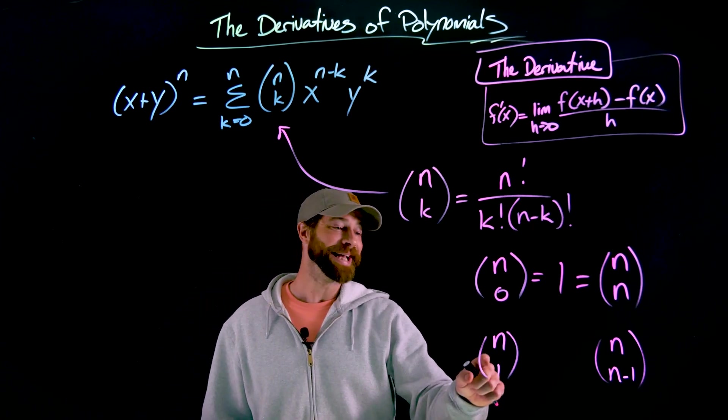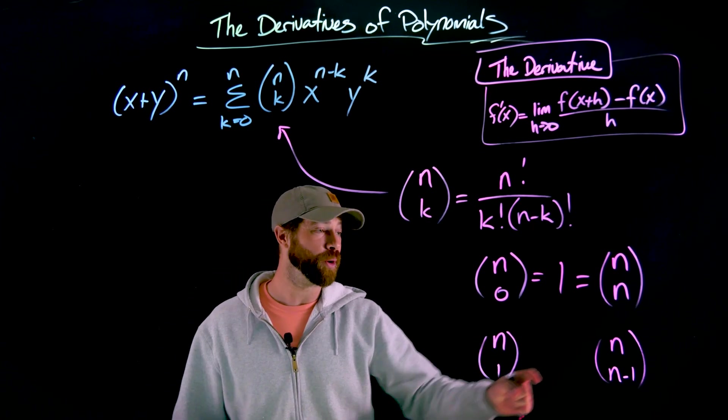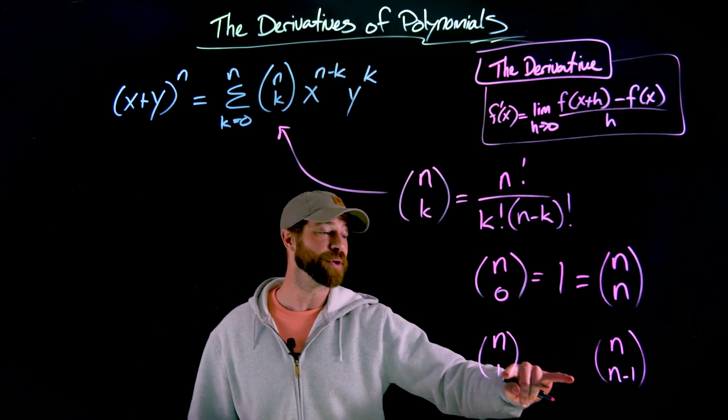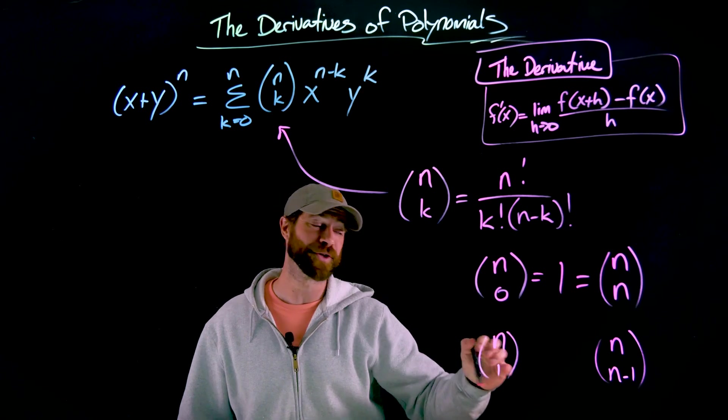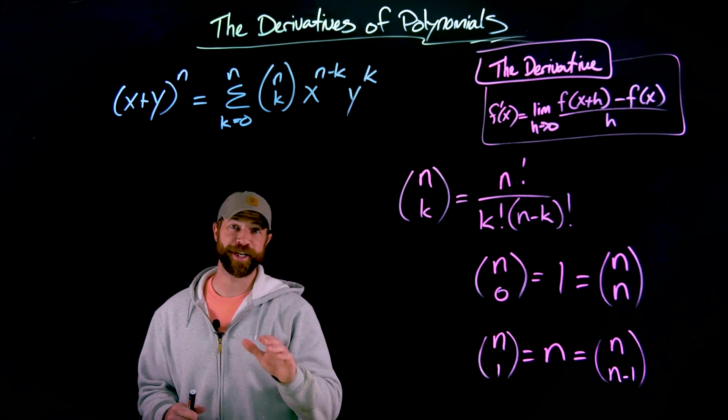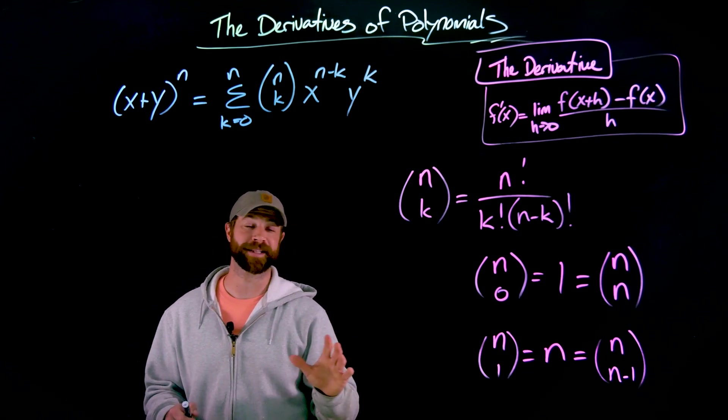Second thing to say is that if you have n choose 1 or n choose n minus 1, so this is 1 less than this right here, you plug either of those statements into the original problem. You'll always output the value n. There's a chance this is feeling all really abstract at this point. Let me ground this with a very specific example.